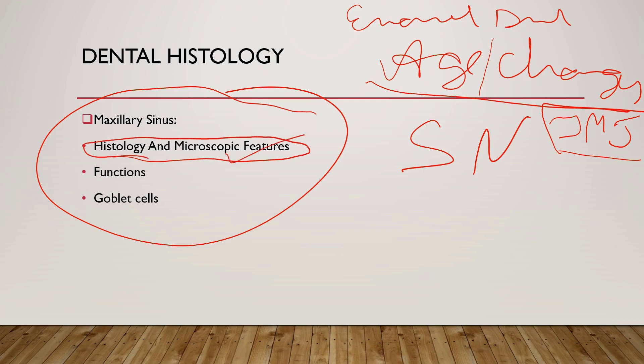You have to draw a well-labeled diagram for the goblet cells. It should label the goblet cells and you should define how goblet cells are there, what is the shape of the goblet cells, and what is the function. That's all about dental histology.